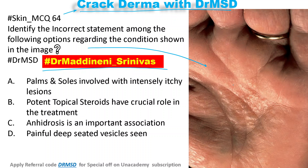In this image, you are able to see a palm which is having fluid lesions. So if you have thought that the diagnosis here is pompholyx, then your answer is right. And if you have thought that option C is the incorrect statement, then absolutely your answer is perfect.